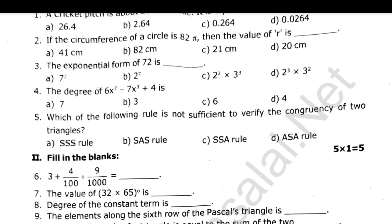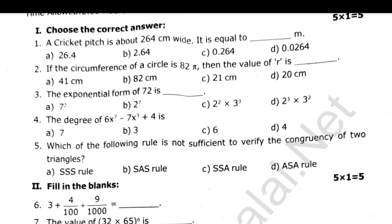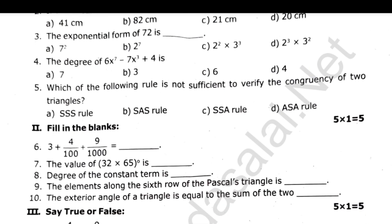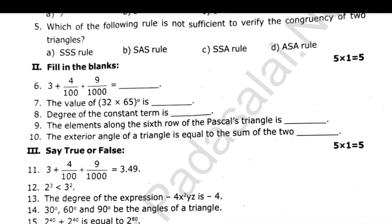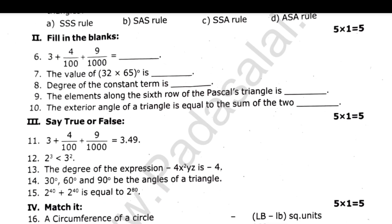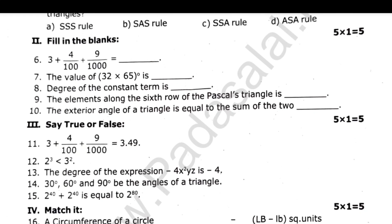Next, fill in the blanks — 5 and 5. Next, choose true or false and correct. Next row is match it — 5 and 5. Circumference of a circle, area of a circle — if you want to talk about the formula, you can match this.